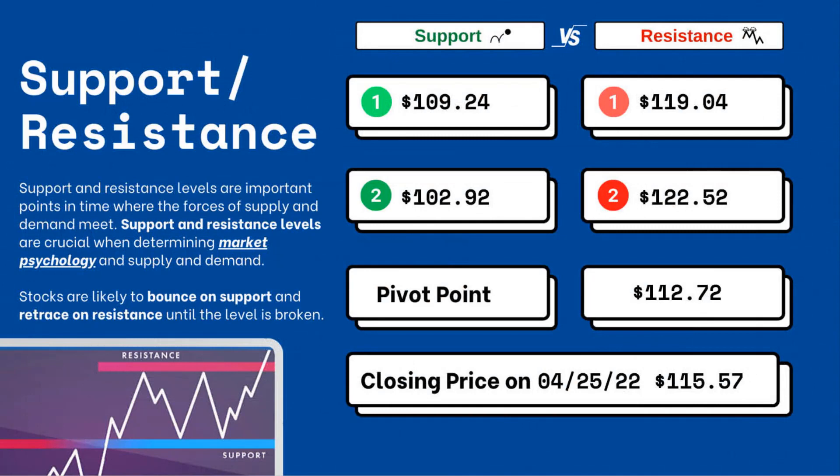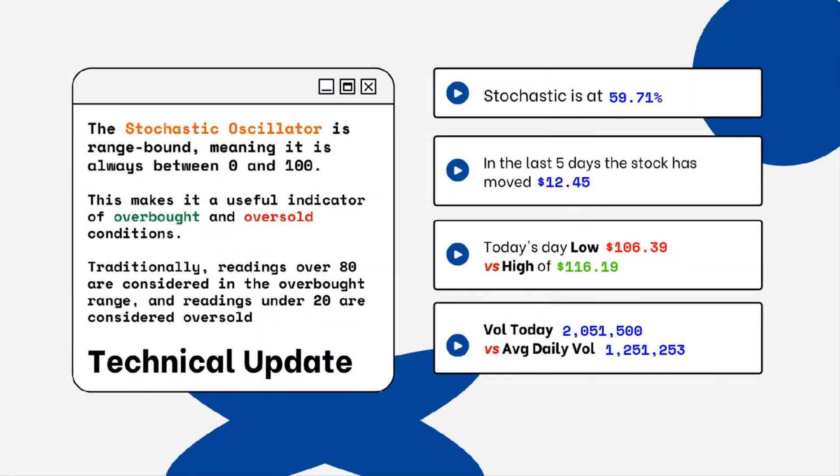On the right side you'll see three support levels and also three resistance levels. These are areas that you want to watch when looking at this particular stock. Stocks typically bounce at support levels and resist at resistance levels, meaning they'll retrace from that top level.